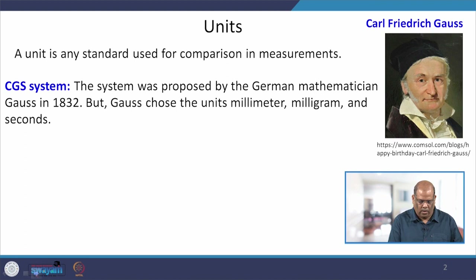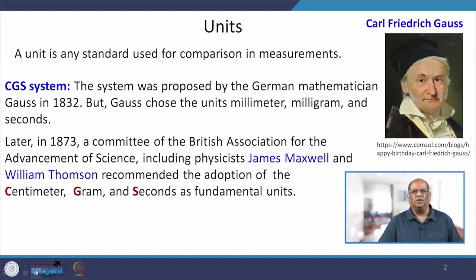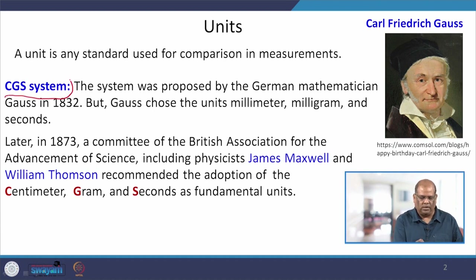Later on, in 1873, a committee of the British Association for the Advancement of Science, which includes famous physicists like James Maxwell and William Thompson, recommended the adoption of centimeter, gram, and seconds as the fundamental units — and hence the name CGS system.